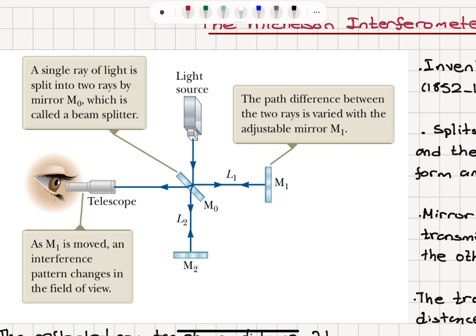And similarly, mirror M2 location is fixed. A ray travels a distance L2 to mirror M2 at normal incidence and it's retro reflected. And we have total distance traveled by this ray as 2L2.